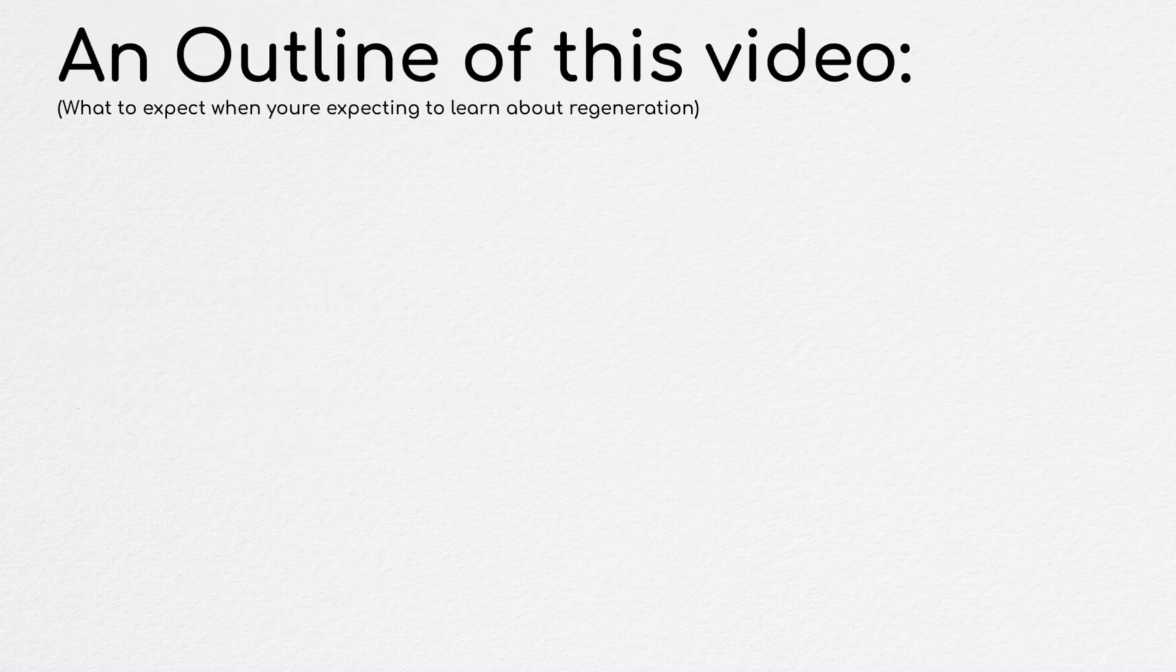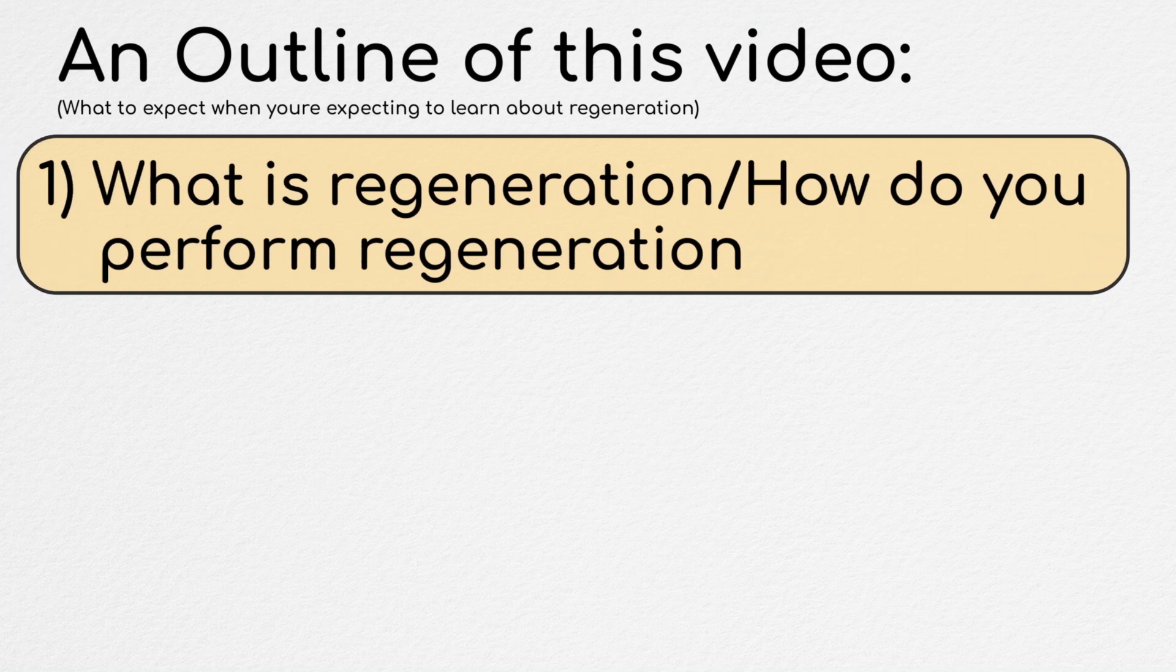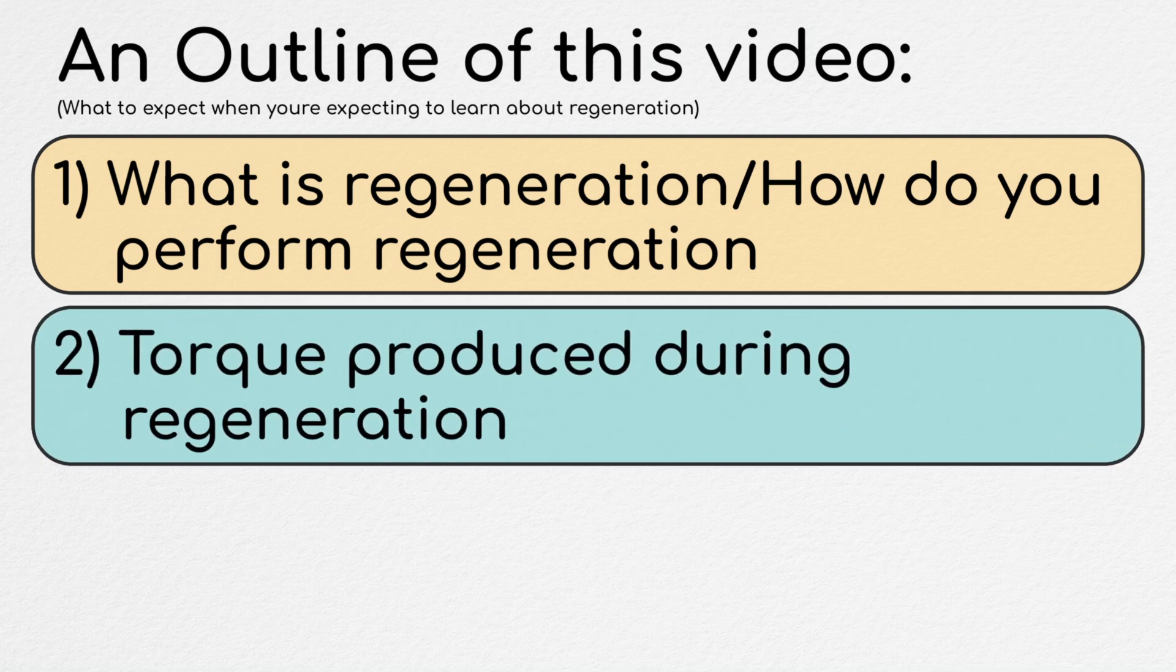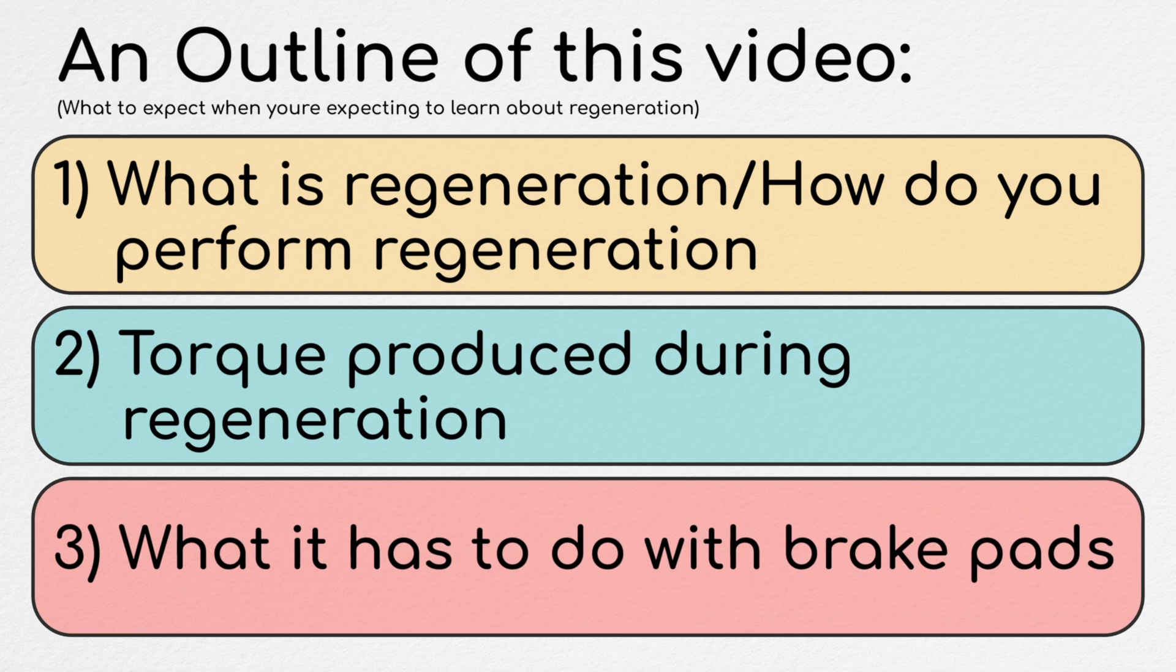This episode, we're going to talk about a couple of ideas which we'll use to approach the question of a car's braking. First, we're going to talk about what regeneration is, and the two primary ways in which it can be performed. Next, we're going to talk about a key idea that's frequently forgotten when talking about regeneration, torque production. And finally, we'll tie all of this information together to discuss the question of regenerative braking we posed in the opening.